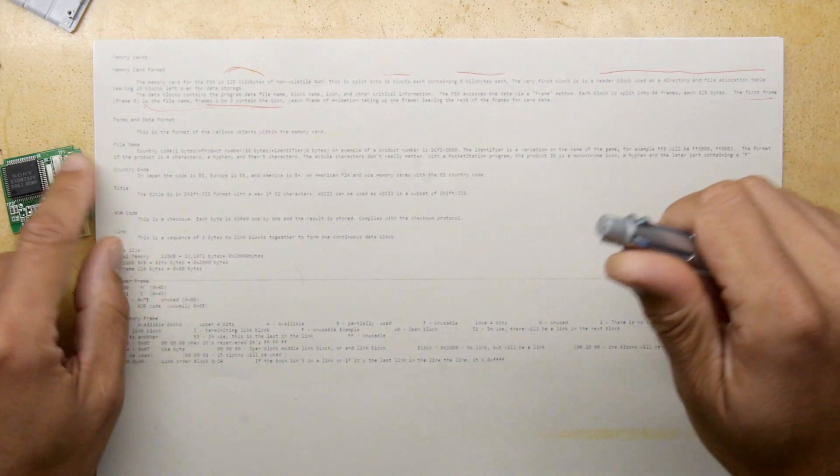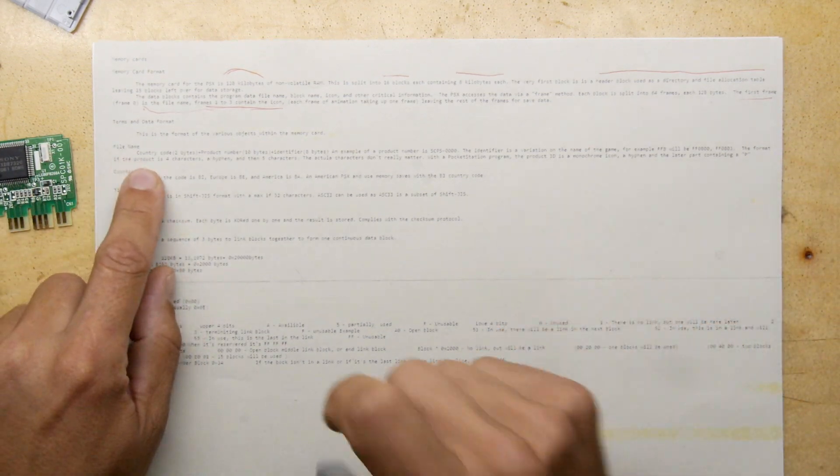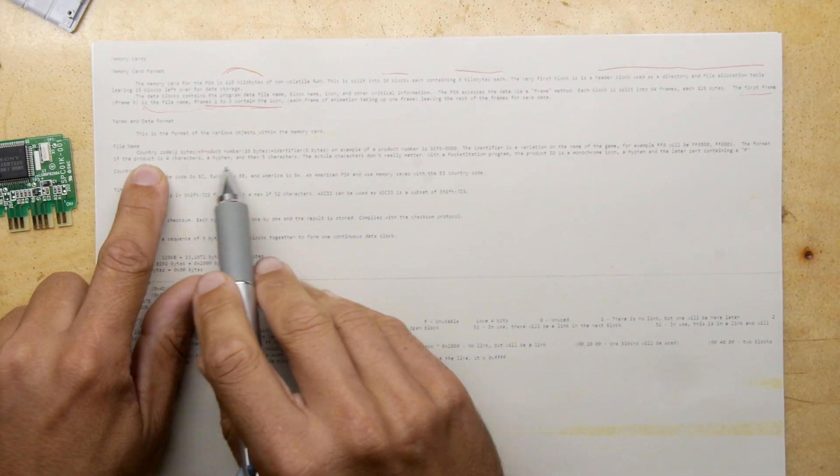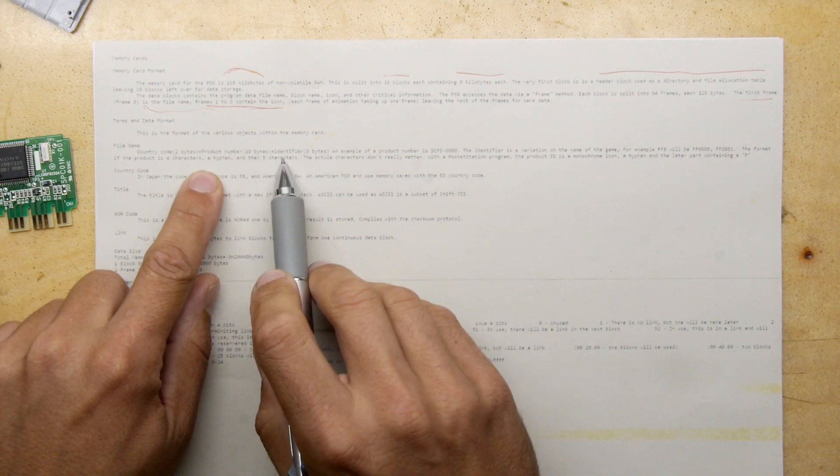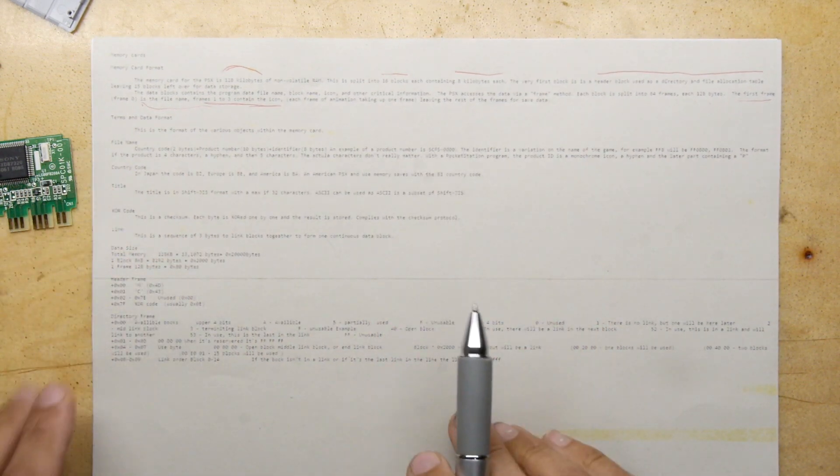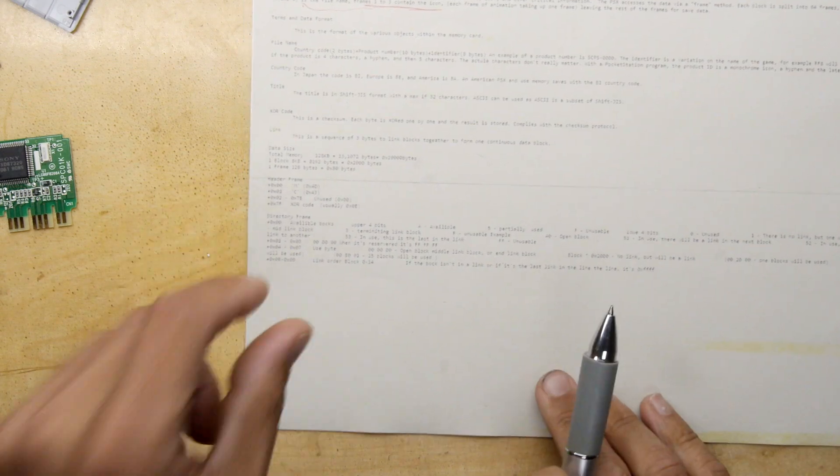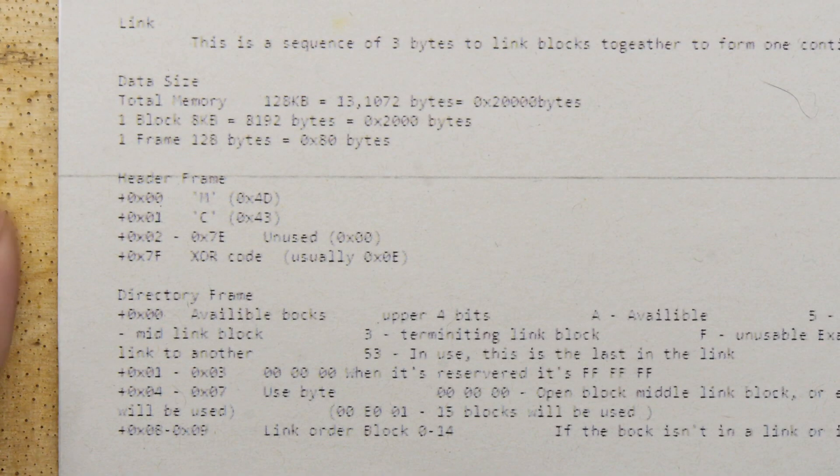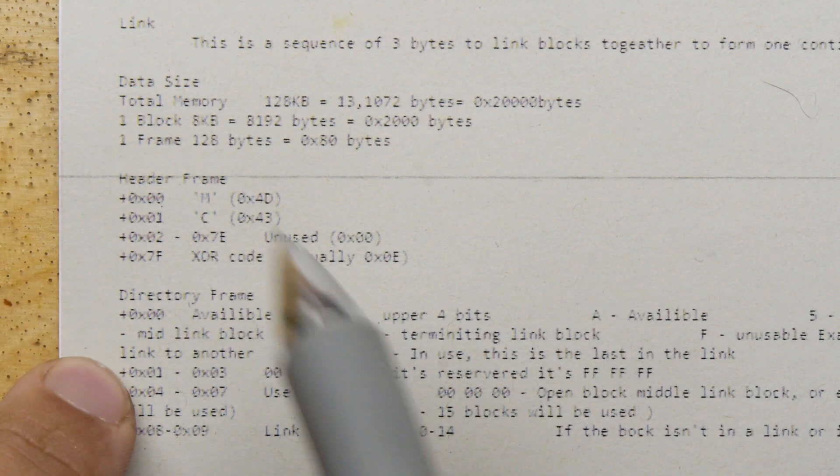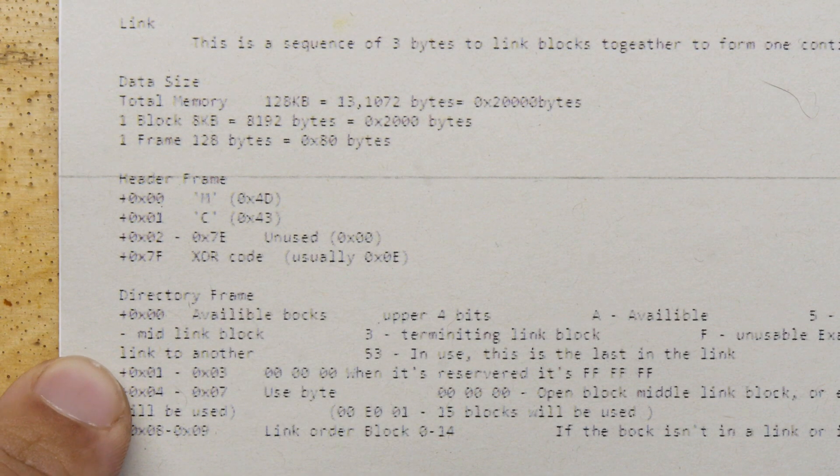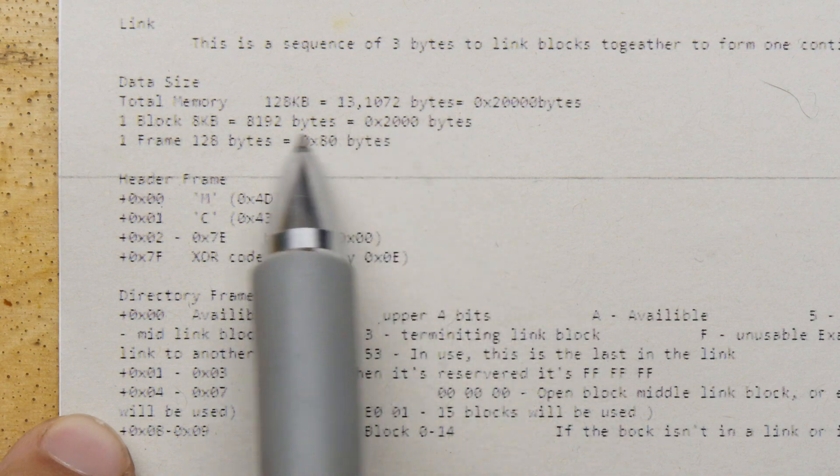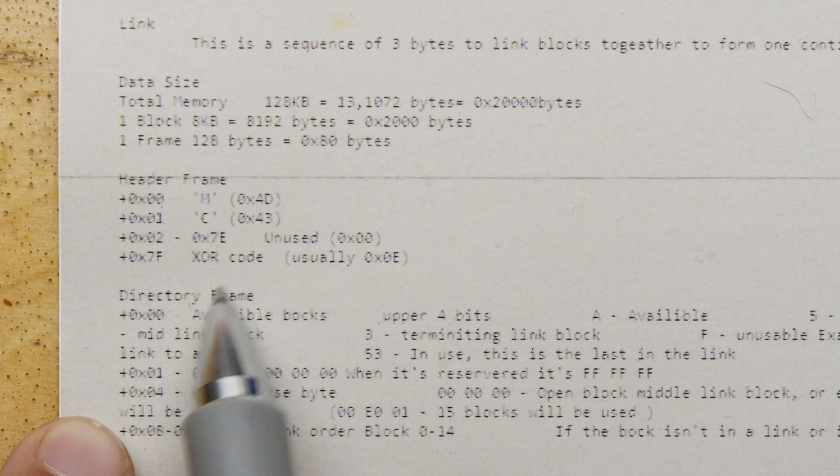And then it goes on to describe how the file name works. You have two bytes of country code, ten bytes of product number, eight bytes of identifier, etc., etc. And then if you go through this, I'm going to zoom in so you can maybe see—it's really badly printed there—you go, you have an actual example here showing some of this where you have the data, the blocks, the header frames, an example there, and then some code.